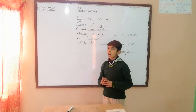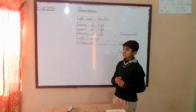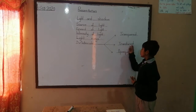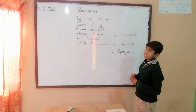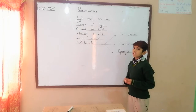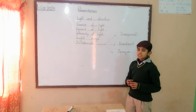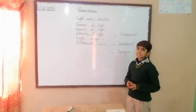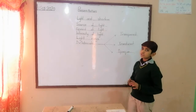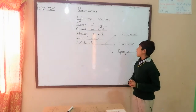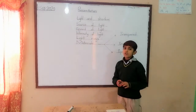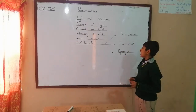Now I will tell you about materials. Materials have three types: transparent, translucent, and opaque material. Materials that allow light to pass through them are called transparent material. For example, glass.